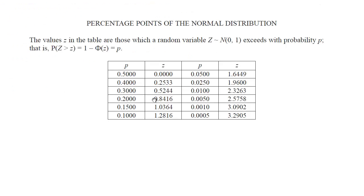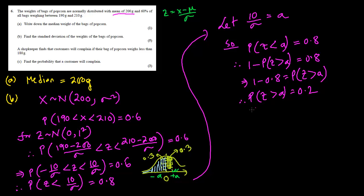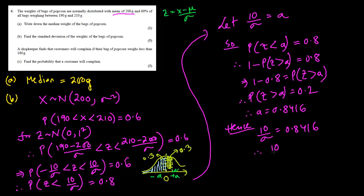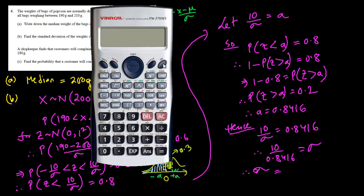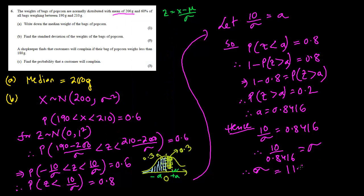When the probability is 0.2, the random variable from the table is 0.8416. Therefore A = 0.8416. Since 10/σ = A = 0.8416, we rearrange to get σ = 10 ÷ 0.8416. Using a calculator, that turns out to be 11.88.